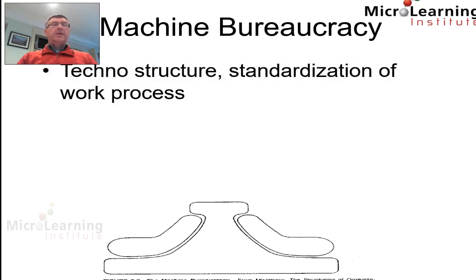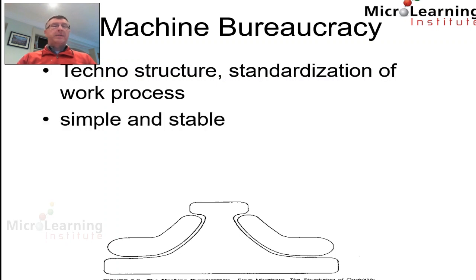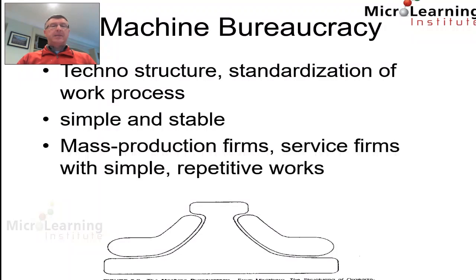In the machine bureaucracy, the technostructure looks to standardize work processes. This is a simple and stable model, and it suits things like mass production firms and service firms with simple, repetitive work.